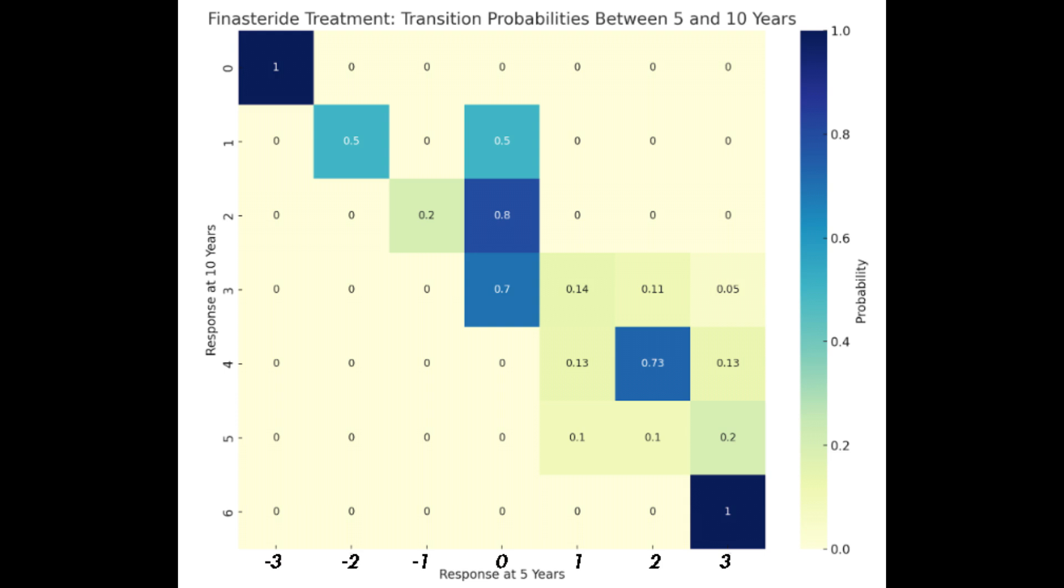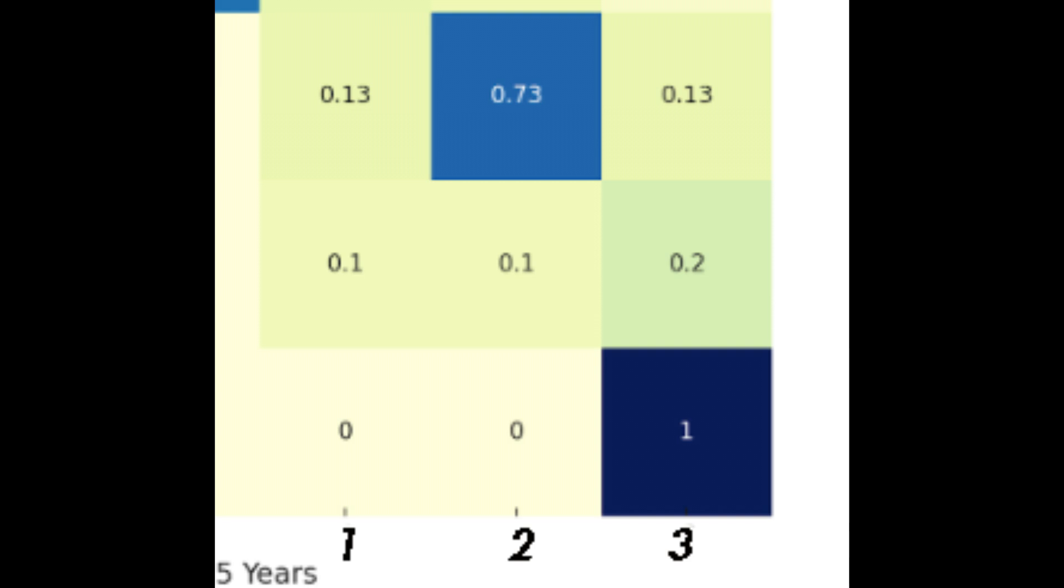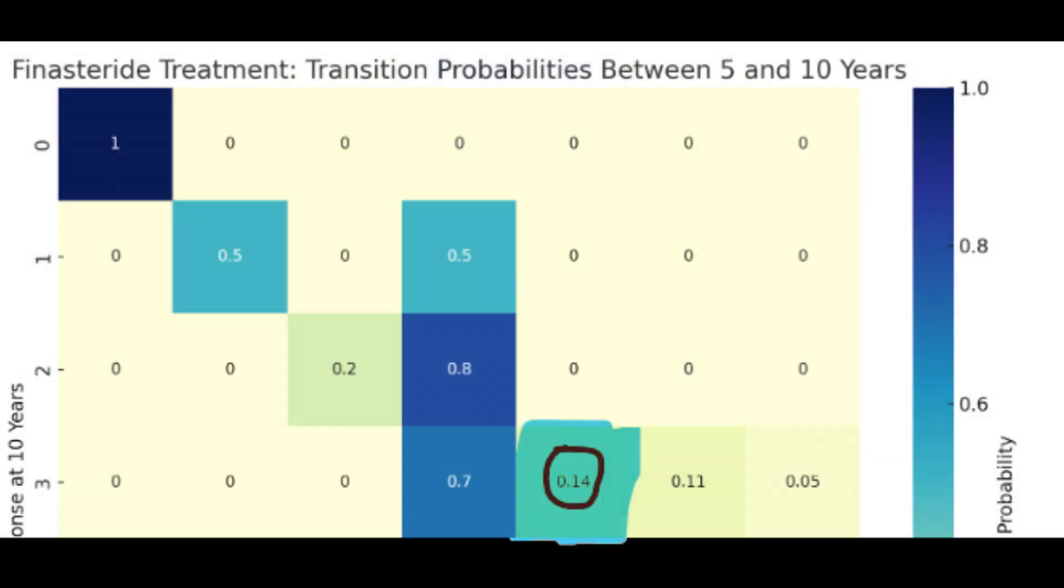For example, the darkest blue square with the value of 1 indicates that all patients with the highest positive response at year 5 remain positive at year 10. The lighter blue and green areas indicate lower probabilities, a lower likelihood of the condition remaining the same or less certainty about the outcome.